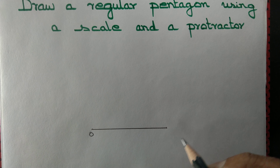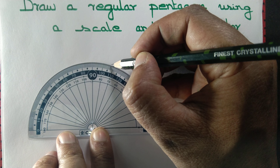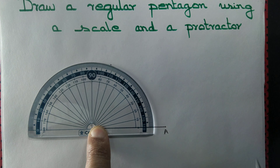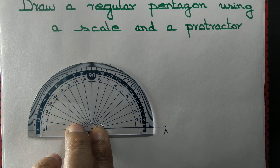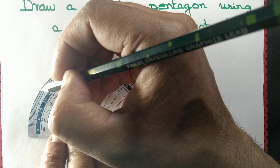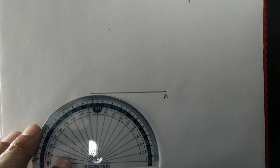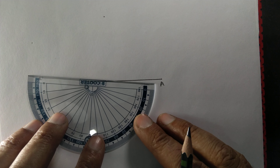Now we take a protractor and mark an angle. We mark a point at an angle of 72 degrees with respect to OA, and another point at 144 degrees with respect to OA.